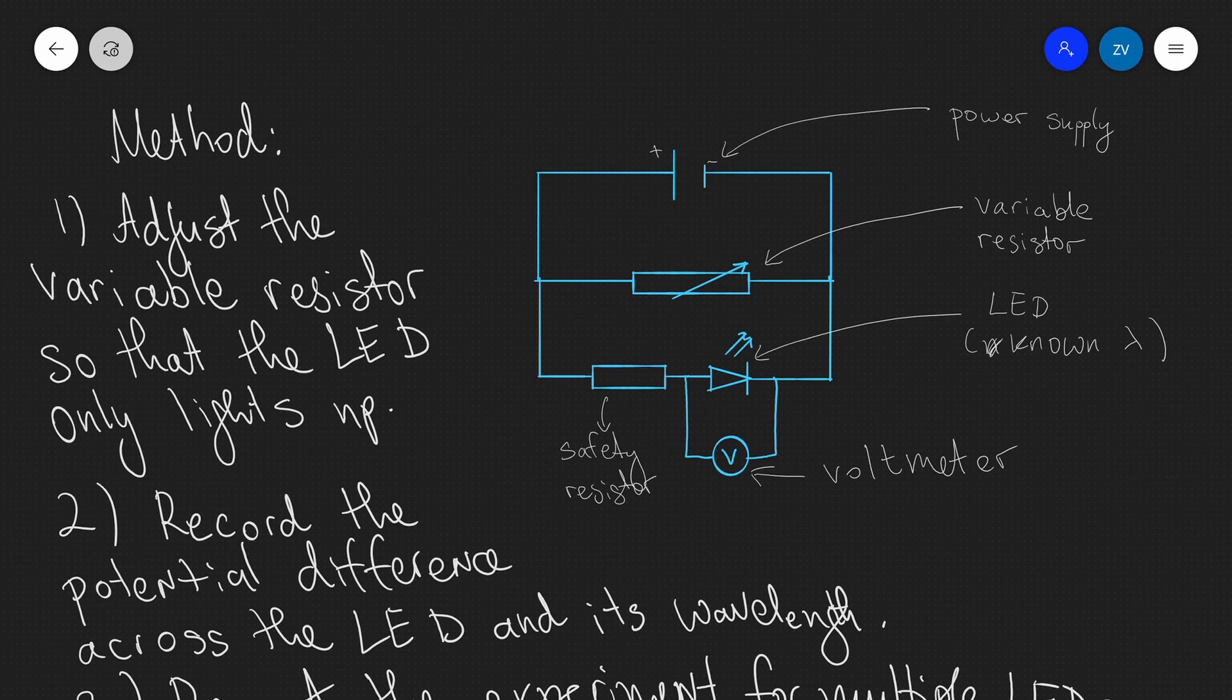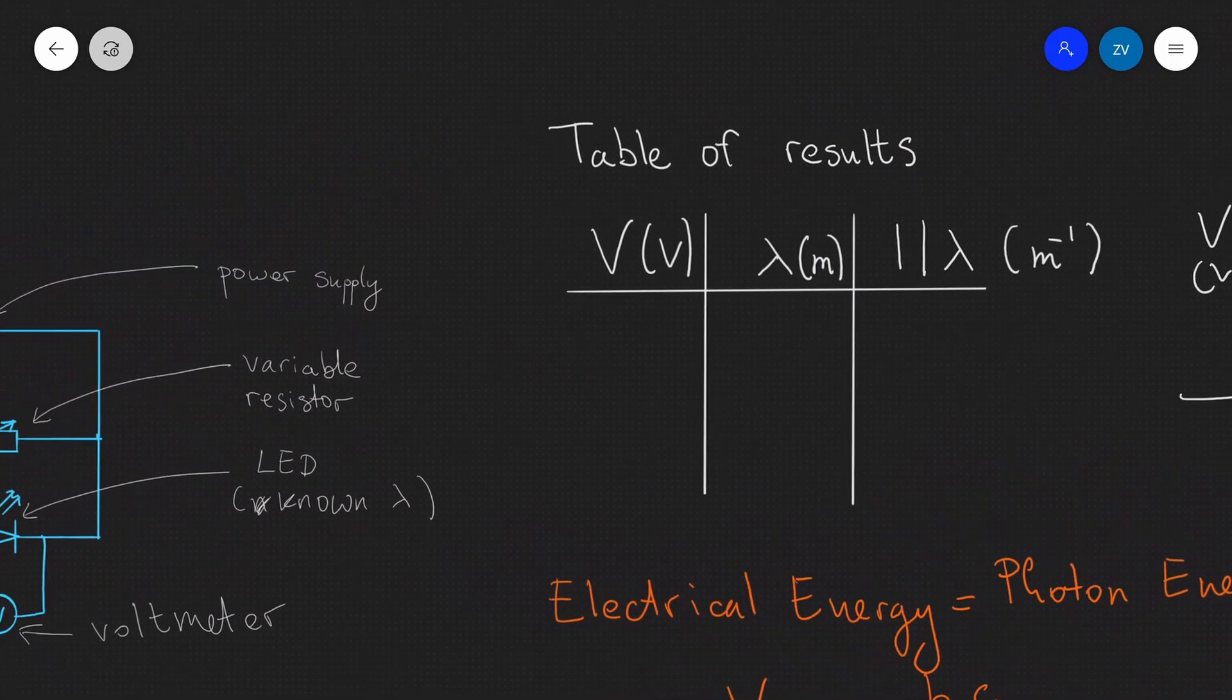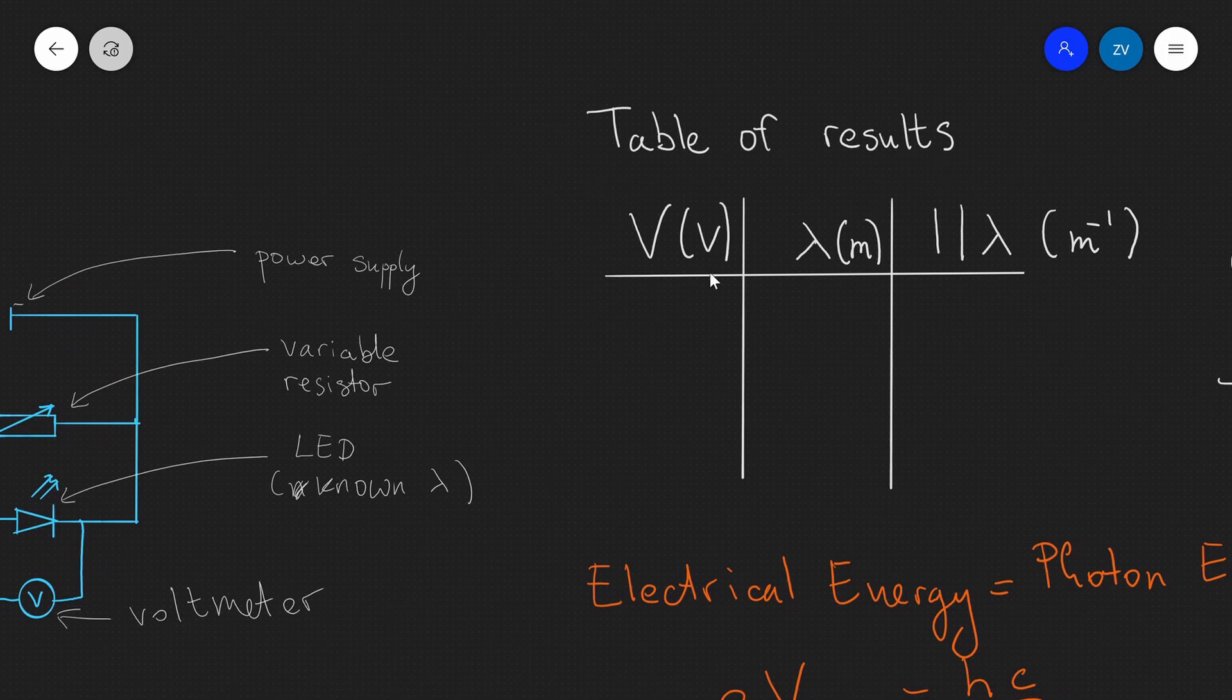Okay folks, now just to summarize, we have the following experiment in which we have a power supply connected to a variable resistor, then we have a little safety resistor and an LED. We're going to be physically adjusting the variable resistor just until the LED starts producing photons. And as soon as it does that, we're going to be recording the potential difference across it. We're also going to be recording the corresponding wavelength of the LED. In practice, our table of results is going to look like so. We're going to have the potential difference in volts and we're going to have the corresponding wavelength in meters.